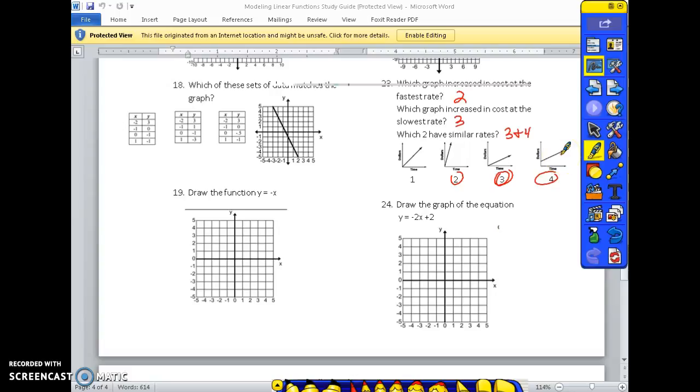24. Draw the graph of each equation. Y equals negative 2x plus 2. You're going to start at 2 for your y-intercept. Negative 2 is your slope. So from your y-intercept, go down 2 to the right. You want to put a point. Connect your points. And that's your graph.